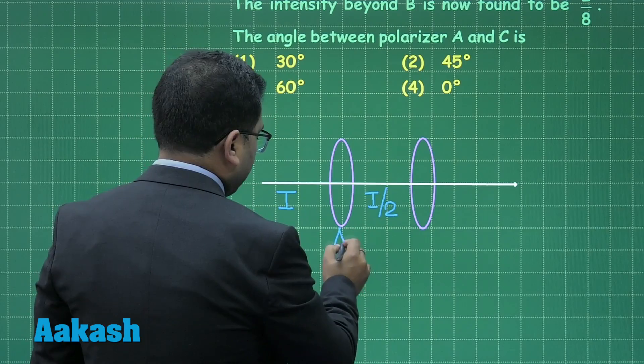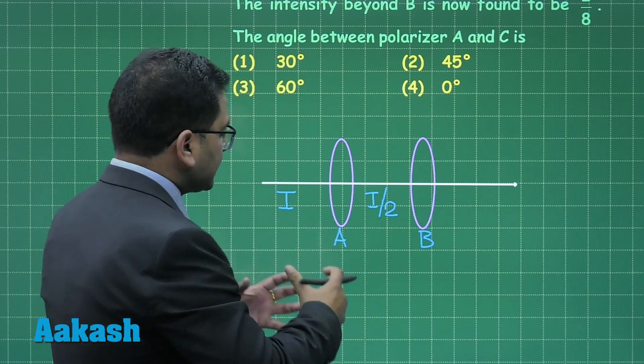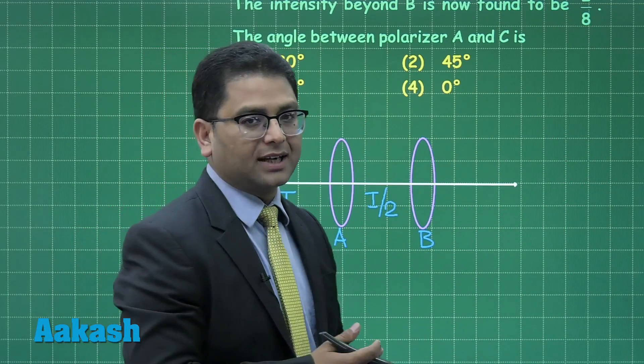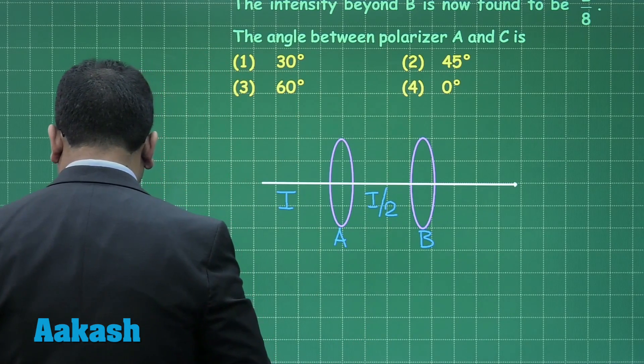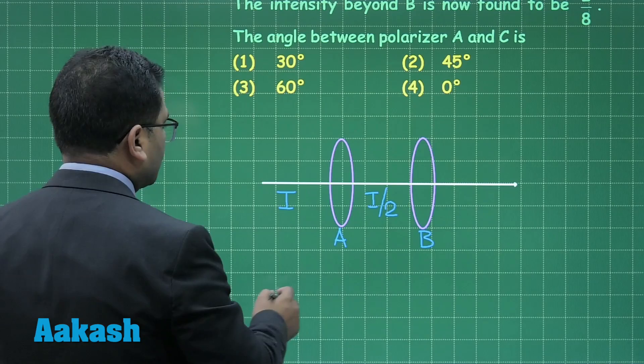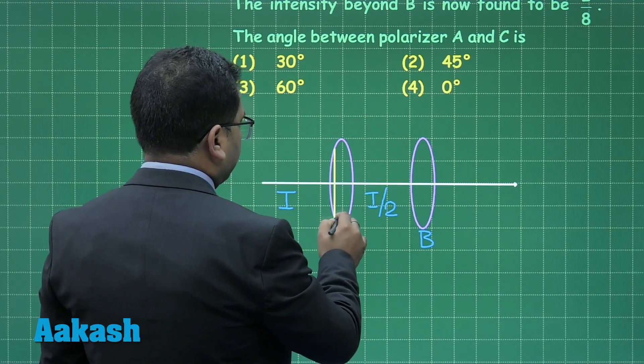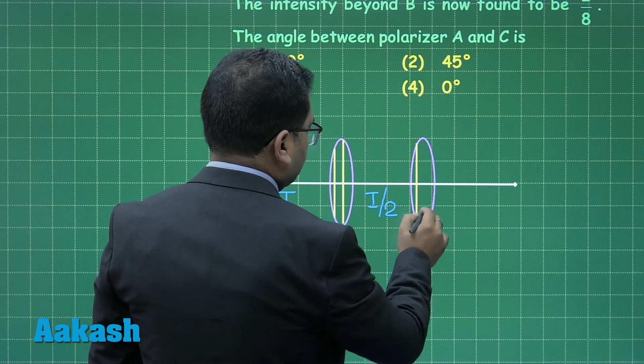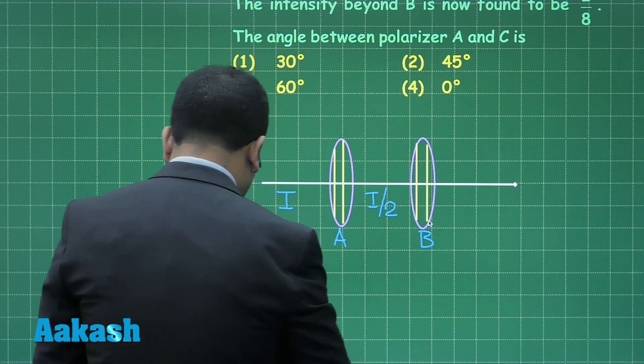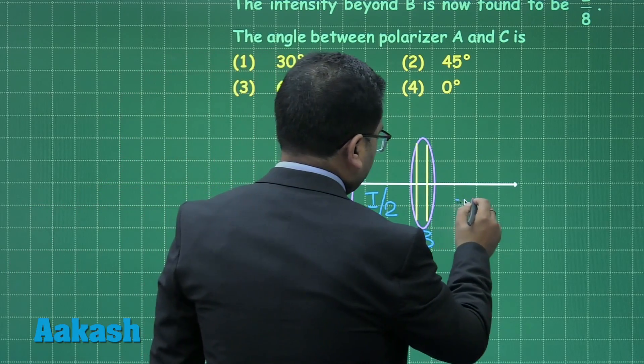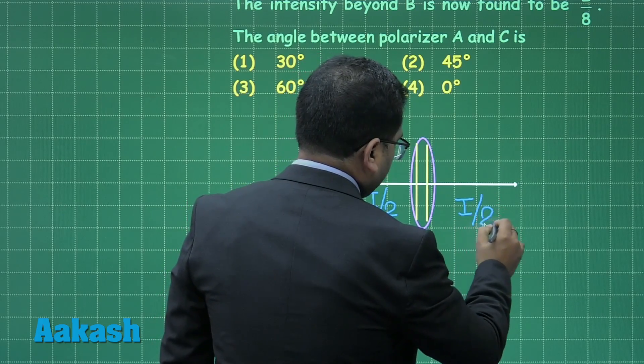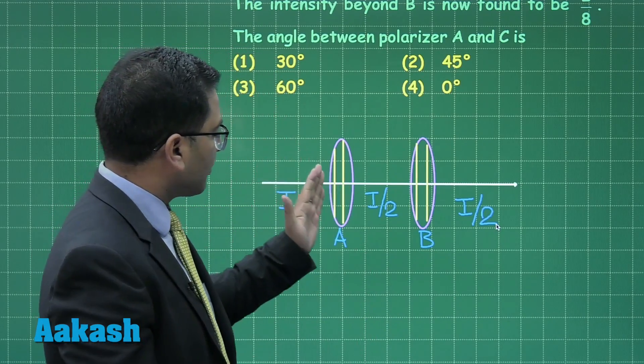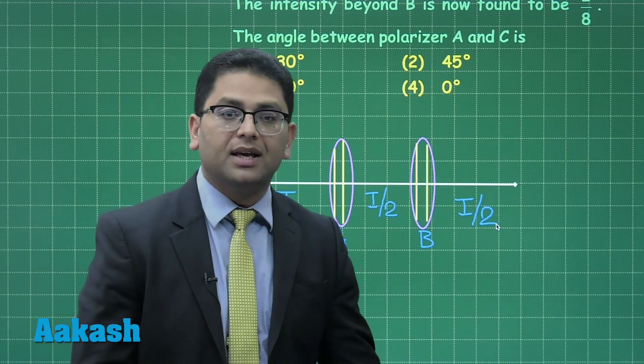Let me try to show with the help of a figure. This is the first polarizer and this is the next polarizer. Whenever light passing has intensity I, this is unpolarized light passing through one polarizer, the intensity is I by 2. This is polarizer A, this is polarizer B, but the question says even after B the intensity of light is I by 2. So that is a straightforward conclusion that the polarizing axis for these two polarizers are parallel.